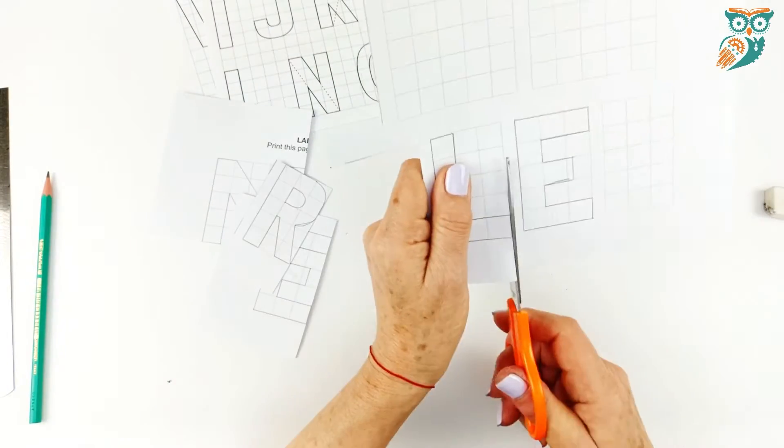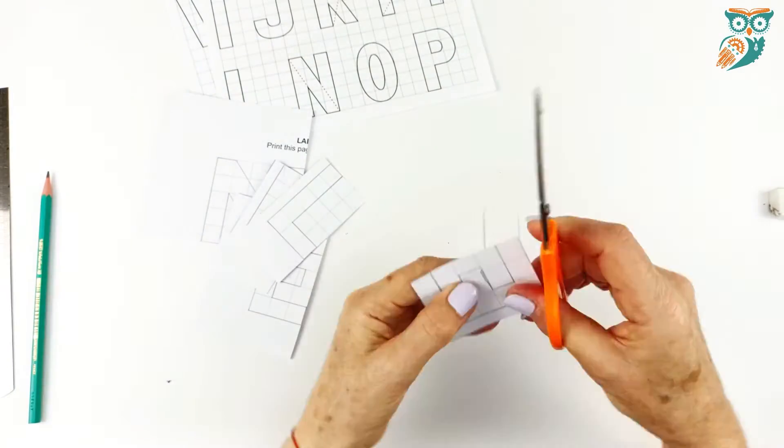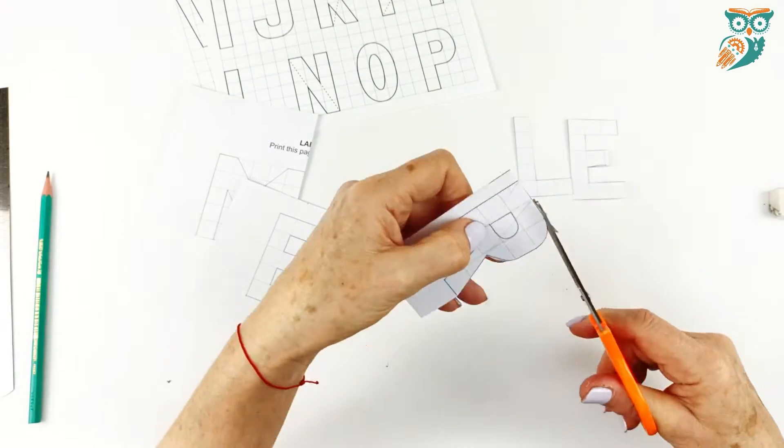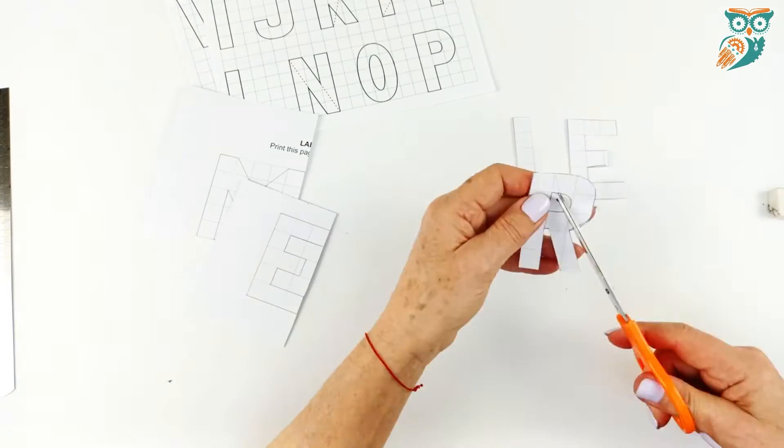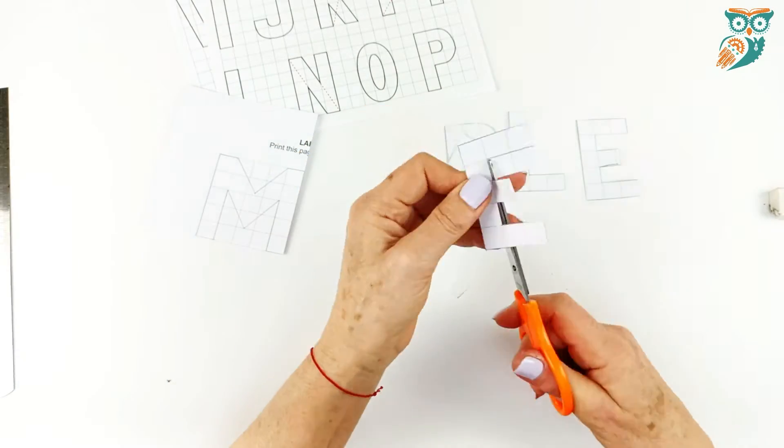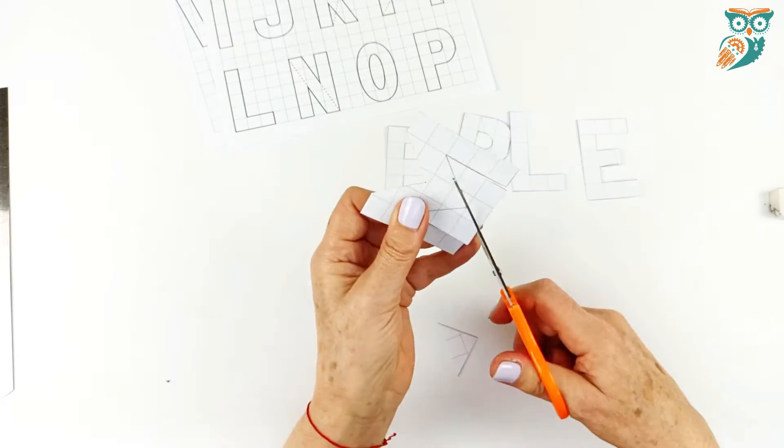Now we're just going to cut out the letters. And again this is a process that is great for students that are first learning how to make 3D shapes. Get all those letters nicely cut out.